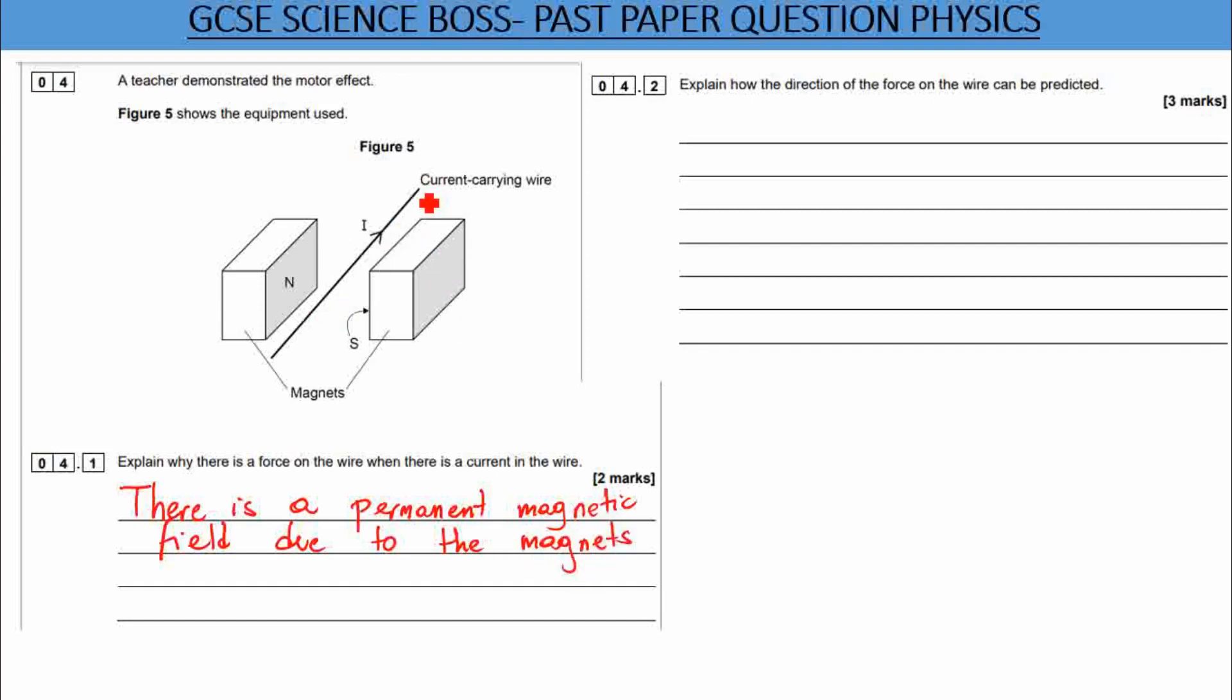There is also a magnetic field due to the current in the wire. There is also a magnetic field due to the current carrying wire. So what you have is a magnetic field here. There is a magnetic field inside another magnetic field and they interact. They are interacting.